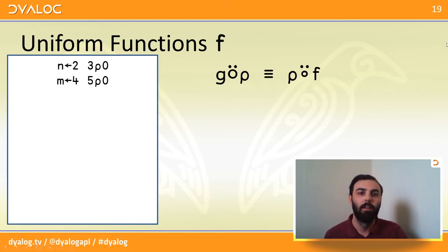Iverson defines a uniform function as a function for which the shape of the result of the application function only depends on the shape of the arguments. It doesn't depend on the values. Right? So we can, again, write this as a nice fork in dialogue version 18. Formally, I suppose, a function f is a uniform function if there exists some function g such that g over shape is identical to shape atop f.